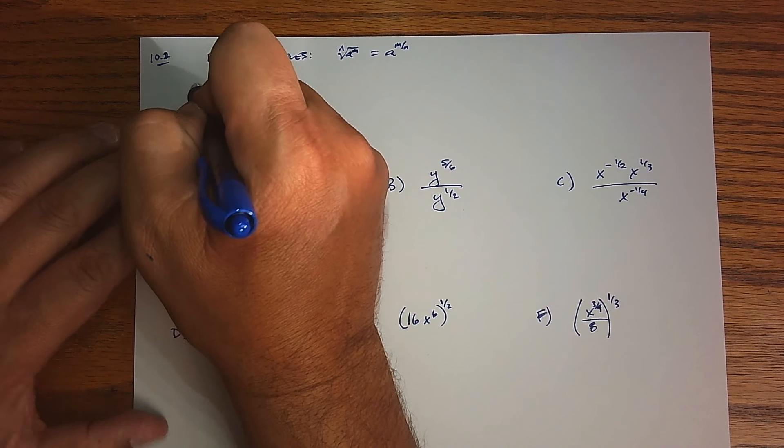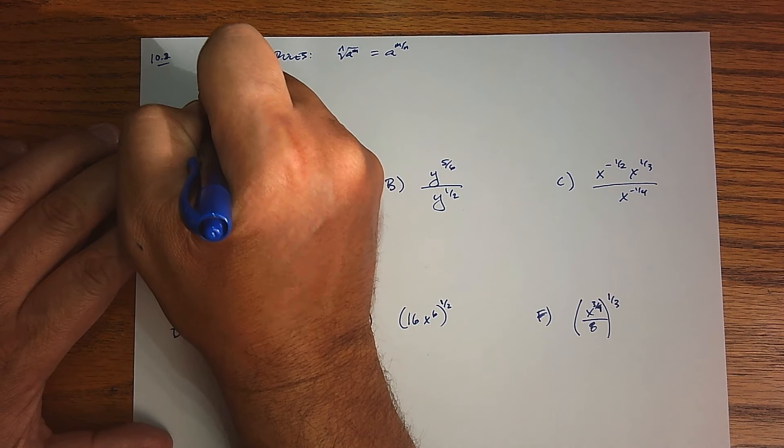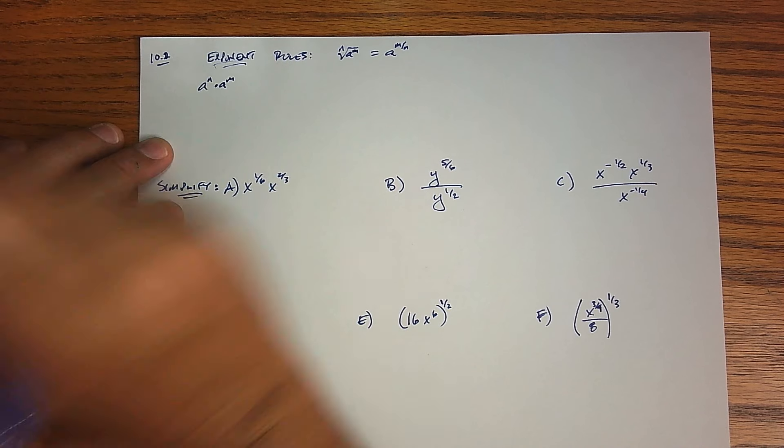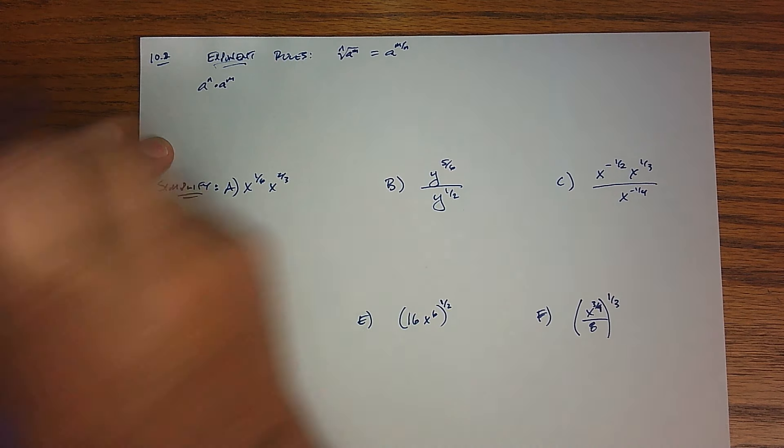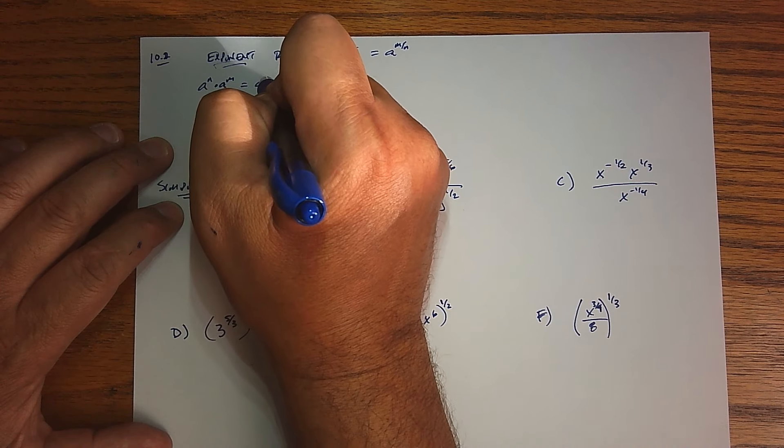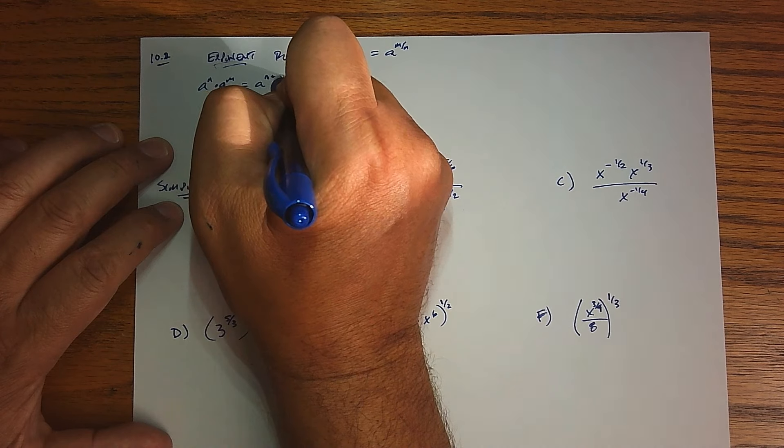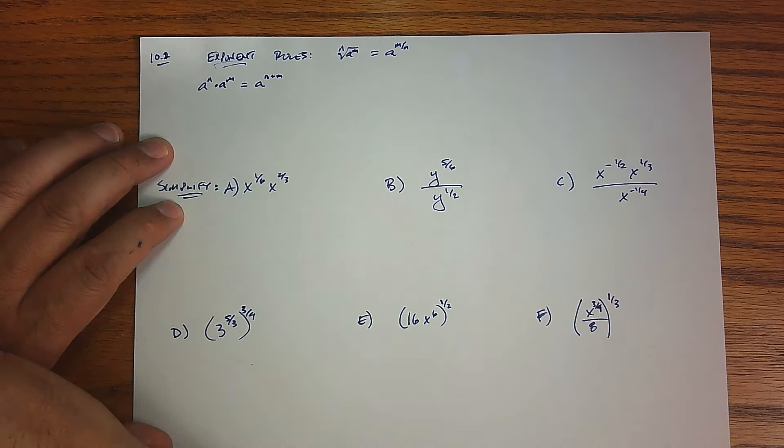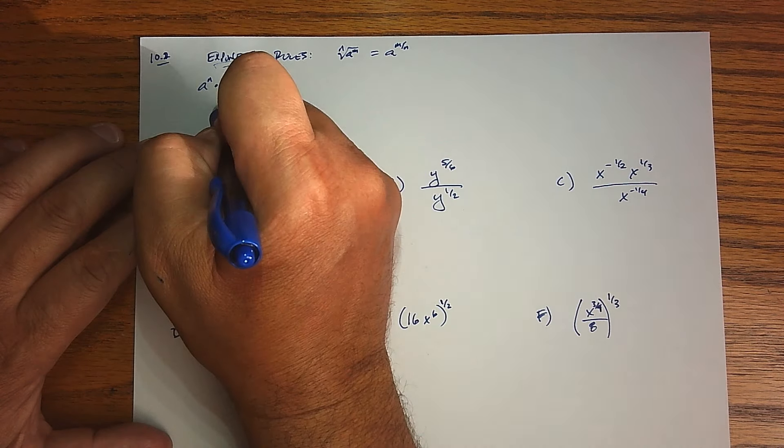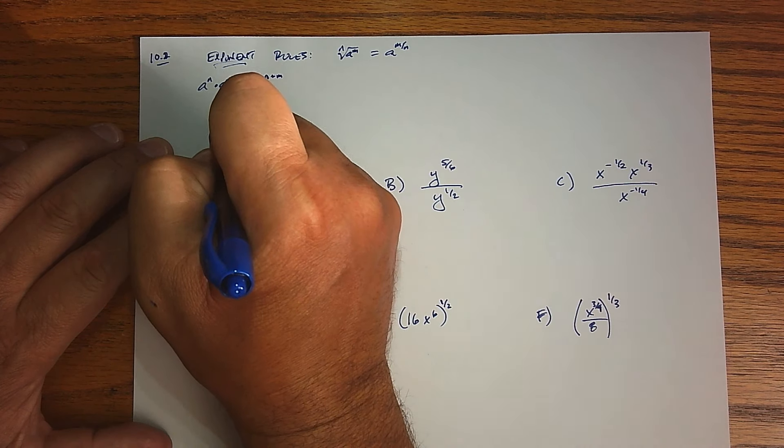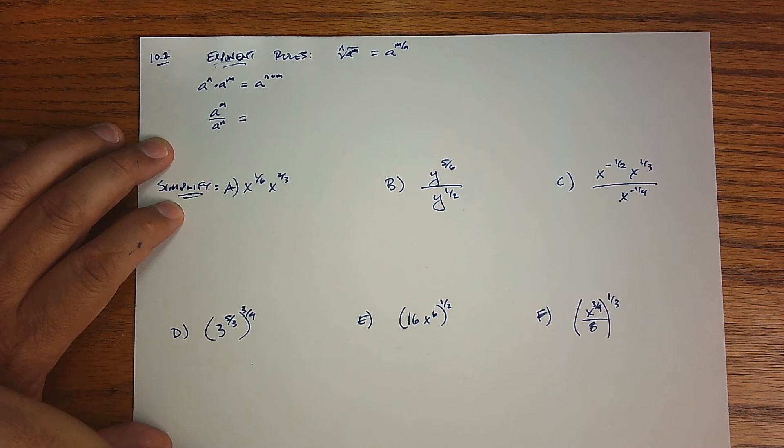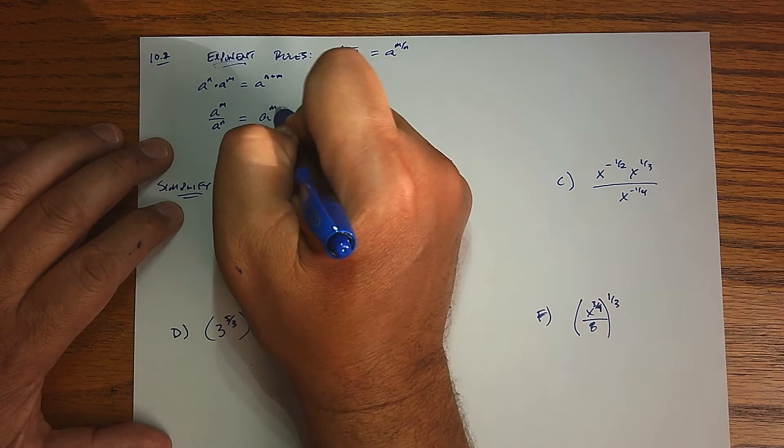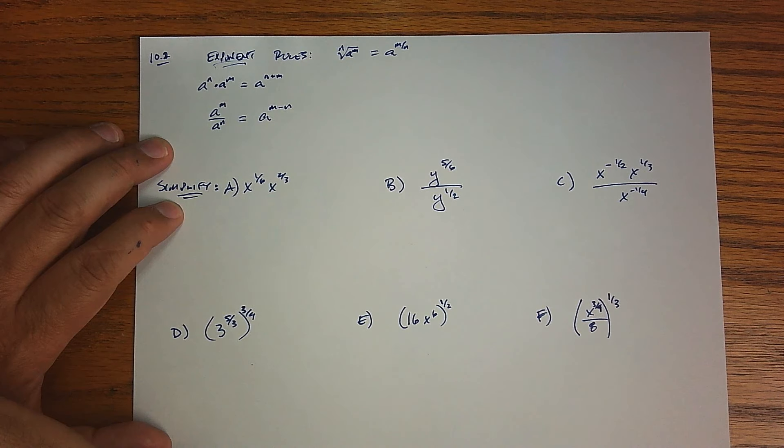The seven of them, I think the big ones, are what happens when I take two exponential expressions and multiply them. We keep the base and we add the exponents, right? That was a big one. The other one is what happens when I divide by the same base. Well, we keep the base and we subtract our exponents, right? Those are the big two.